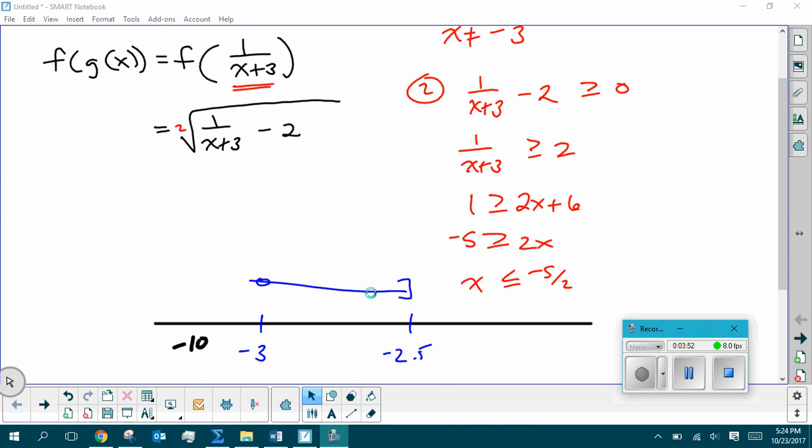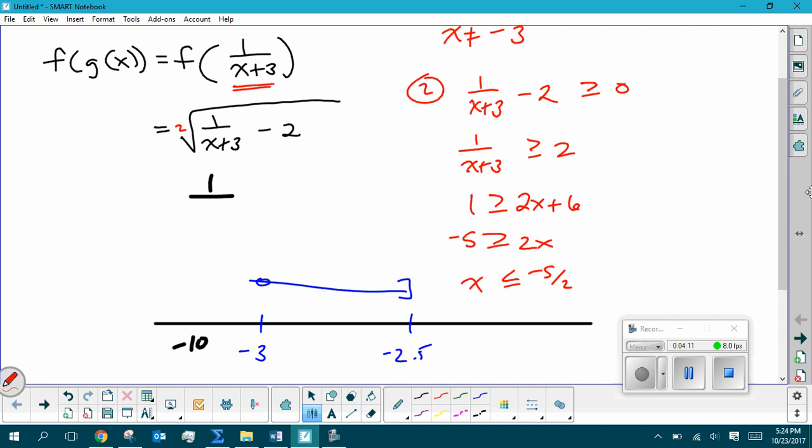So let's try like negative 2.75. Well, negative 2.75 is going to give me 1 over, okay, so 1 over negative 2.75, negative 2.75 plus 3 is going to give me 0.25. Well, 1 over 0.25, so 1 over 1 4th is 4. 4 minus 2 is 2. You can take square root of 2. So numbers in this region are going to work.